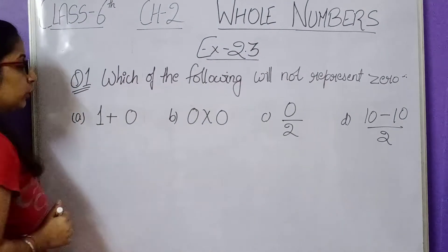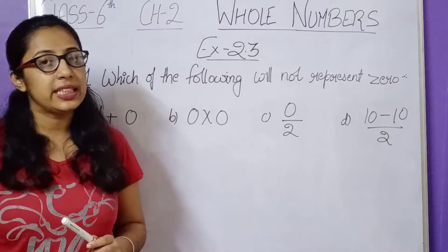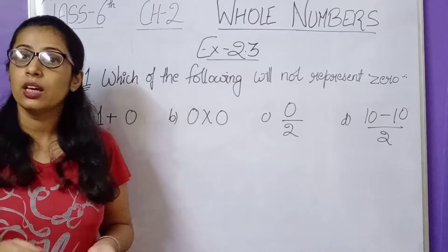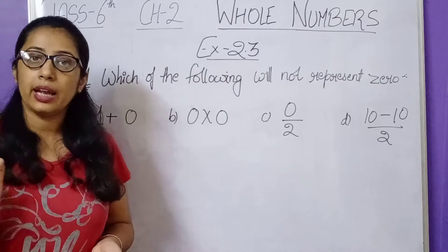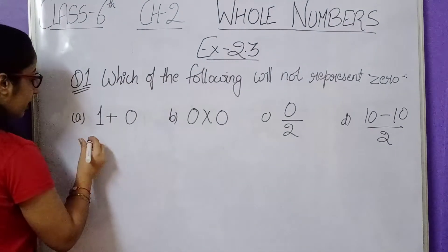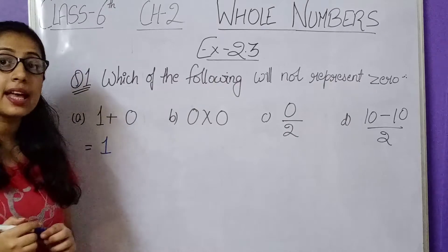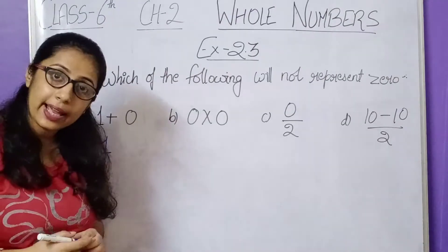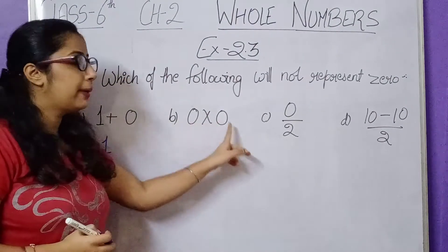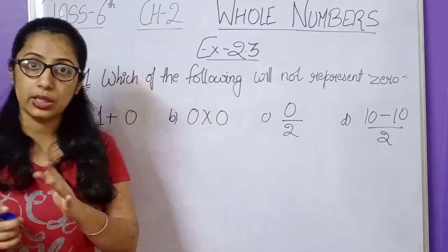First, 1 plus 0. If I add any number to 0, the number itself is the answer. So 1 plus 0 equals 1. Next, 0 multiplied by 0 — that means 0 into 0 is 0.